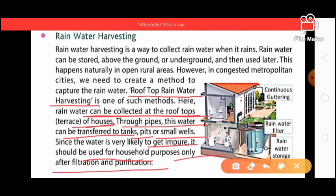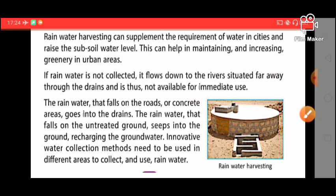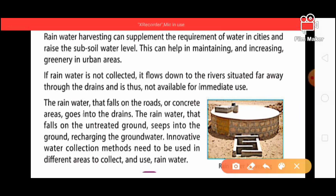There are more chances of the water becoming impure, so after filtration and purification it should be used for household purposes. Rainwater harvesting can supplement the water requirements of cities and raise the sub-soil water level. This can help in maintaining and increasing greenery in urban areas. If rainwater harvesting is done in cities, there will not be a shortage of water.